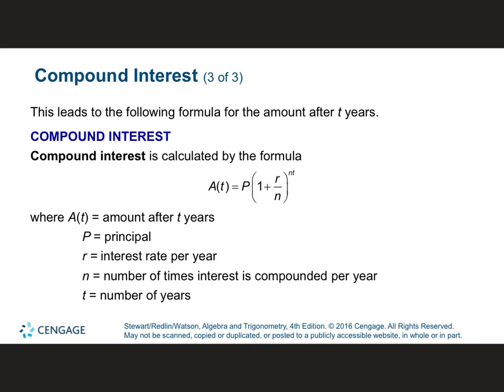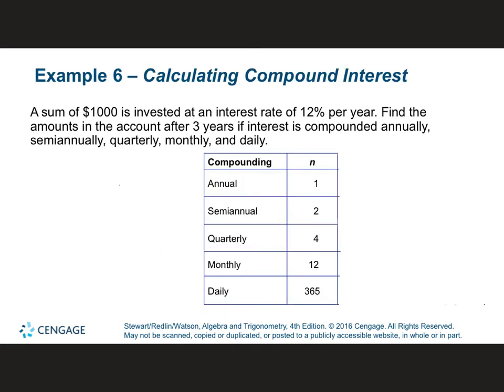Your T is your number of years. So for example, if they give you six months, that's only half a year, so T would be 1 half — or 0.5 — not 6. Your calculator is going to be a huge help with these. As long as you write down the formula and plug in your values, you can just solve from there.